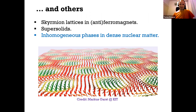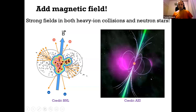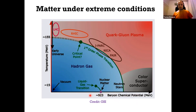Last but not least, and this is what I'll focus on for the rest of my talk, you can have inhomogeneous order in dense nuclear matter. There are different types of inhomogeneous order proposed to exist in the phase diagram of QCD. I will focus on one particular qualitatively new type of order which is different from all those I've shown until now. Here is a basic reminder — we are switching from the cartoon part of the talk to discussing dense quark matter.